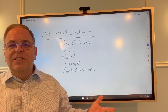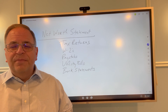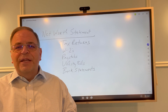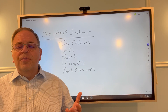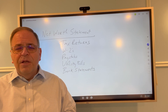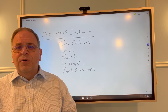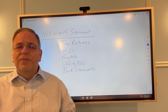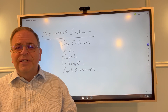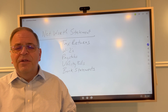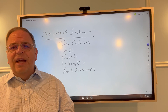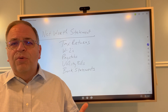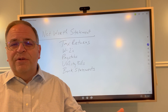Your attorney would go through that with you to update the information provided originally at the initial outset of the divorce. In order to prepare the net worth statement, you need to put together certain things to help you input the information. You need to know what your income is, so you need either a pay stub, a W-2, or some other form of documentation that shows how much your income is, what taxes you pay, what your withholding is, what contributions you may have to a 401(k), 403(b), or some other retirement accounts, and what other deductions are coming out of your paycheck.